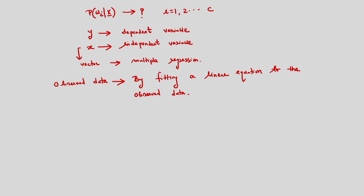The objective of regression is to predict y from x. The dependent variable is called the response or outcome, and the independent variable is called the predictor or regressor. If we consider only one independent variable, it is simple linear regression; if we consider two or more independent variables, it is called multiple linear regression. We have to find the statistical relationship between the dependent and independent variables.